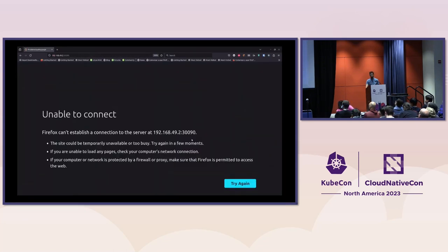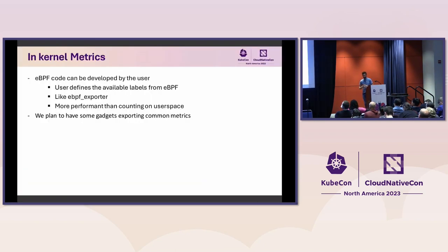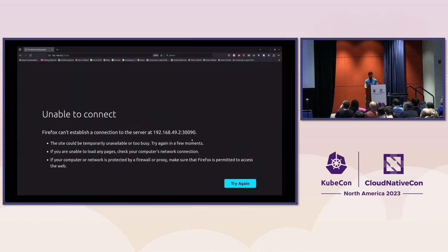What is interesting about this approach is that you don't have to worry about writing BPF code — you can use our existing tools to get some metrics. However it is less performant, so there is a trade-off. The other way to collect BPF metrics in Inspector Gadget is to count them directly in kernel space. In that case the user has to develop their own BPF code and define the granularity they want — very similar to the BPF Exporter case — and this is more performant than counting in user space. We also plan to provide built-in tools supporting common metrics so users may not always have to write BPF code themselves.